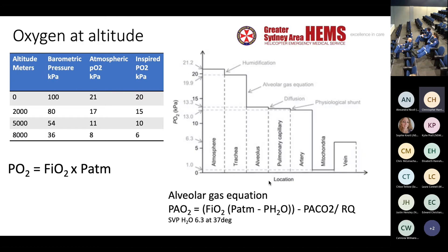As an anaesthetist, I couldn't possibly get through a presentation without the alveolar gas equation. The main takeaway is that at altitude, the standard vapour pressure of water doesn't change, and so it becomes a much bigger proportion of the gas existing in the alveoli. This reduces your inspired oxygen from around 21%. If you get up to 2,000 metres, you're looking at about 15%.